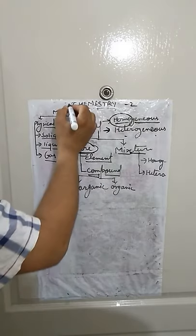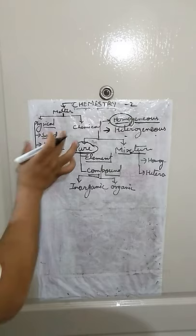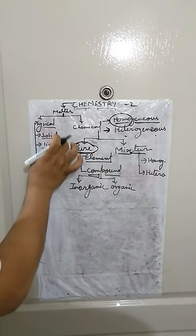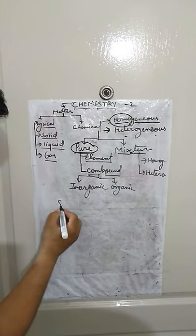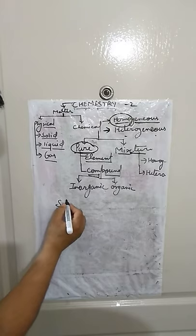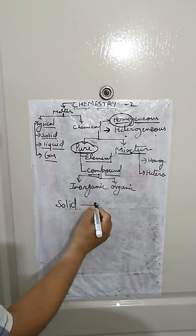In the last class we saw that chemistry basically starts with matter, and we can classify this matter physically. One out of that is solid, another is liquid, and the third one is gas. The most important thing about solid, liquid, and gas which I have to tell you is that with the help of heat you can convert a substance from one state to another.